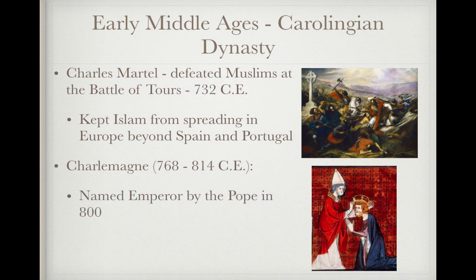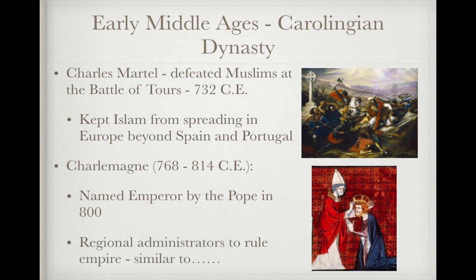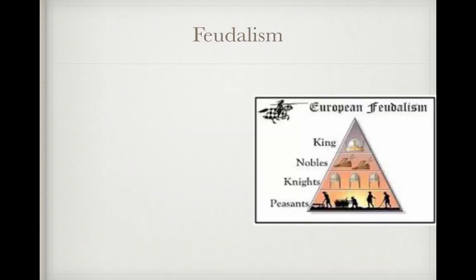Charlemagne, ruling from 768 to 814 CE, was named emperor by the pope in 800 CE. He used a series of regional administrators to govern his empire, which is similar to the satrap system used in the ancient Persian Empire.